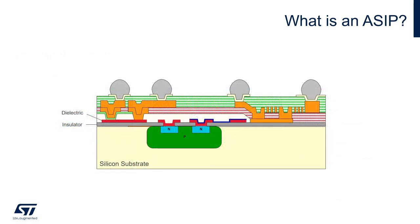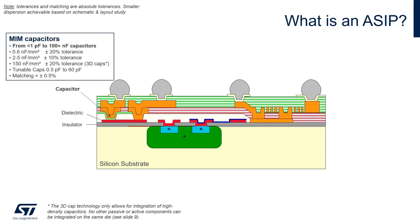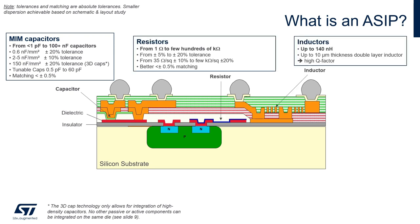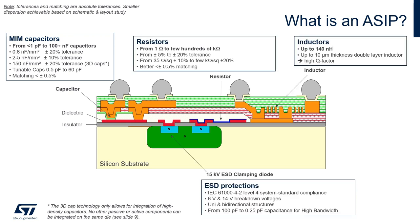Let's have a look at the typical cross-section of an ASIP. The ASIP technology allows for the integration of capacitors — metal insulator metal type — resistors, inductors, and system-level ESD protections compliant with the highest level of the IEC 61000-4-2 standard.